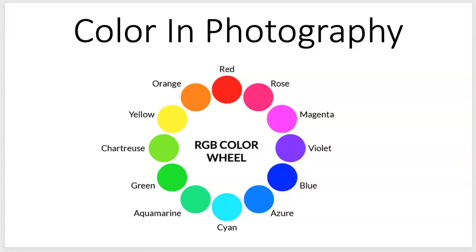First, we're going to be working with the RGB color wheel, which is a photographic color wheel — a little bit different than the painter's color wheel. Red is opposite of cyan, yellow is opposite of blue, green is opposite of magenta. I'm not as familiar with the painter's color wheel, but it's different in how it lines up with what's considered complementary and what's considered analogous.